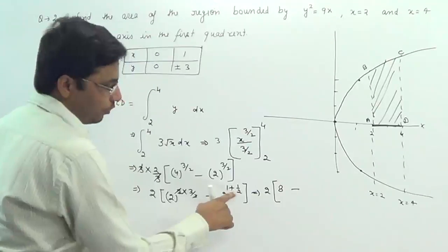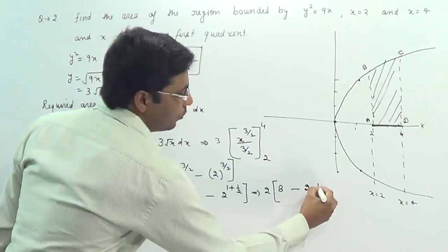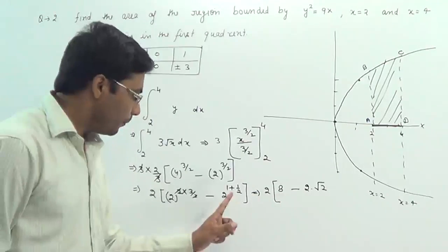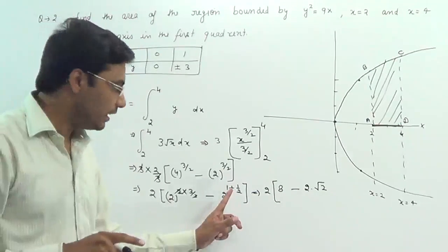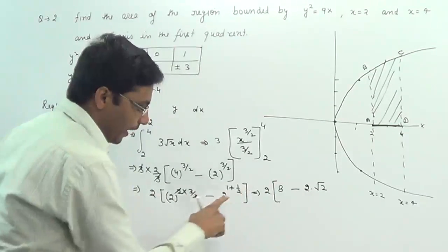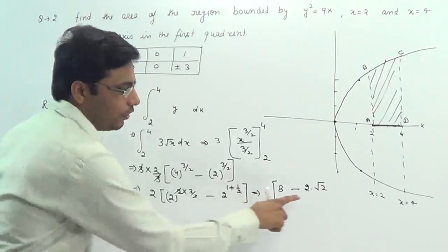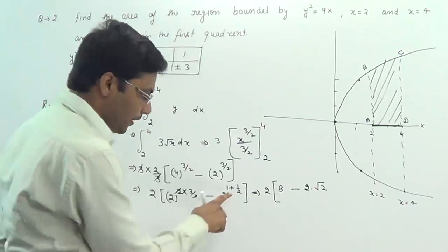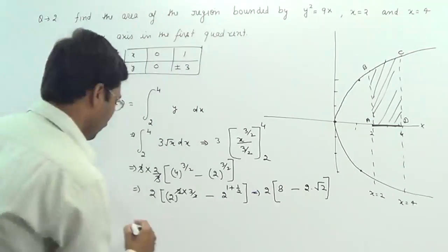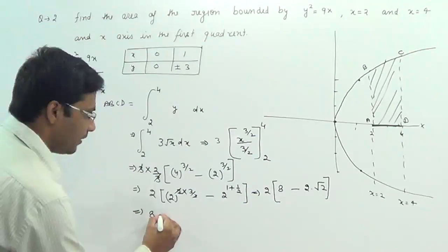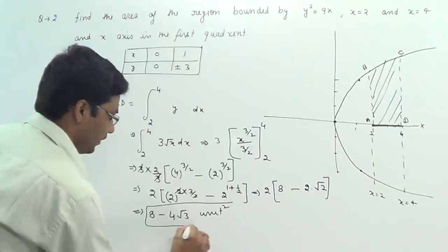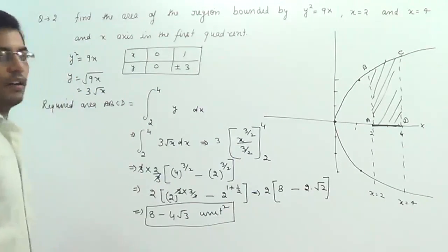2^(1 + 1/2), which we can write as 2 times √2. When there is a plus sign in powers, it converts into multiplication: 2^1 multiplied by 2^(1/2), and 2^(1/2) is √2. Now multiplying by 2, you will get 8 - 4√2 square units. This is our required answer.